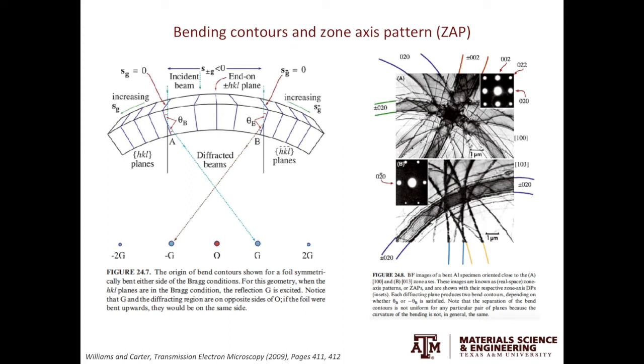However, very locally, because of bending, like here and here, the local excitation error is equal to zero. The intensity of the diffracted beam will be at its maximum and the intensity of the direct beam will be at its minimum. In the bright-field TEM image, locally, these two regions will appear to be dark, which gives rise to the bending contours.